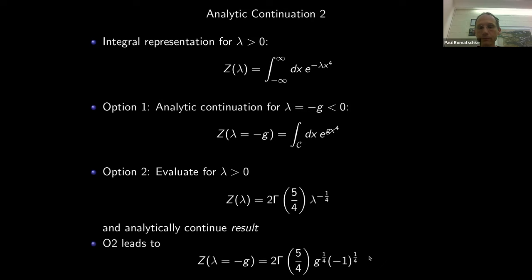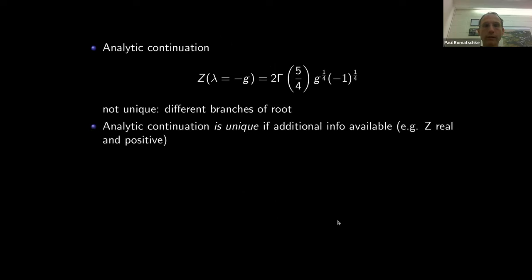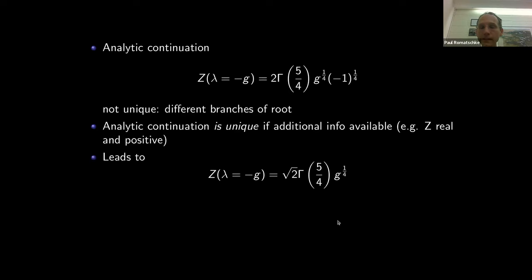One natural additional piece of information is to require that the partition function be real and positive. With this requirement, there is a unique analytic continuation to negative coupling. The key point is that for things that look like toy field theories, the result at negative coupling is no more nonsensical than evaluating the Riemann zeta function at negative arguments — and we can measure that experimentally.